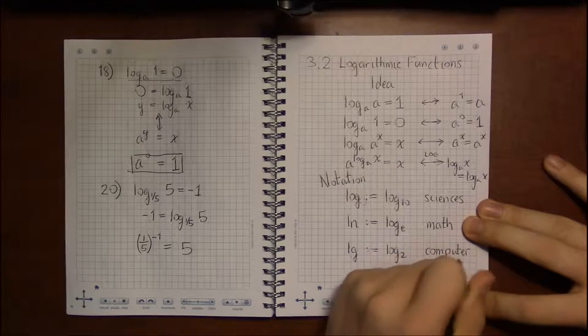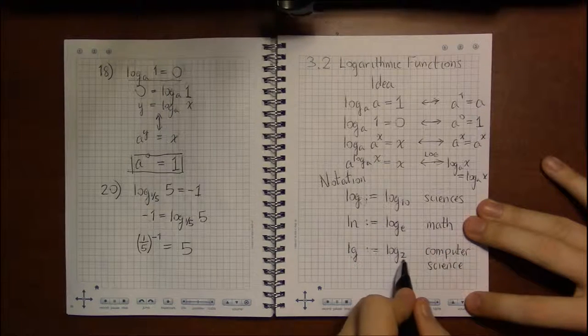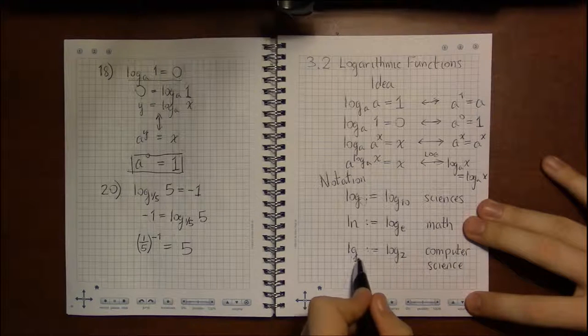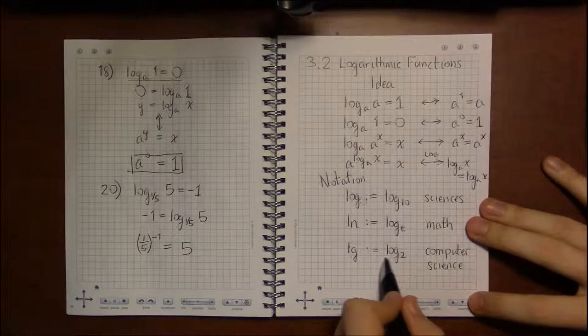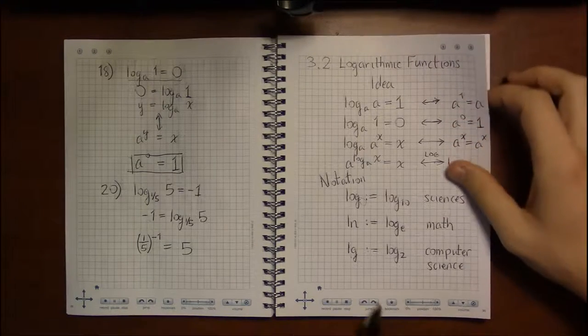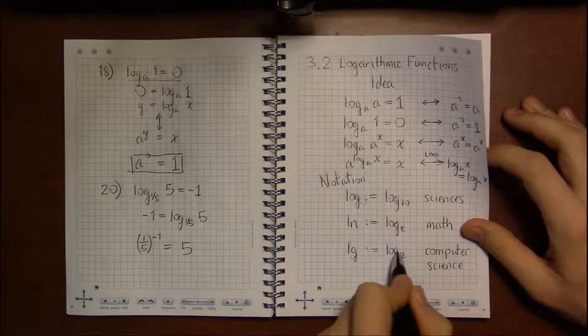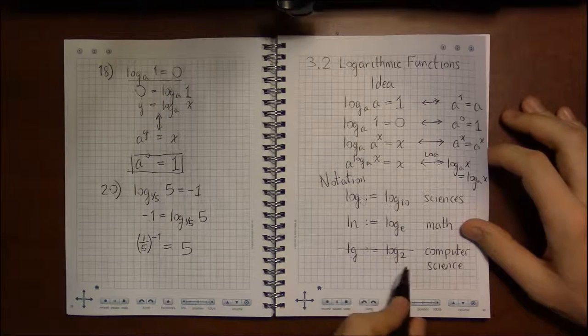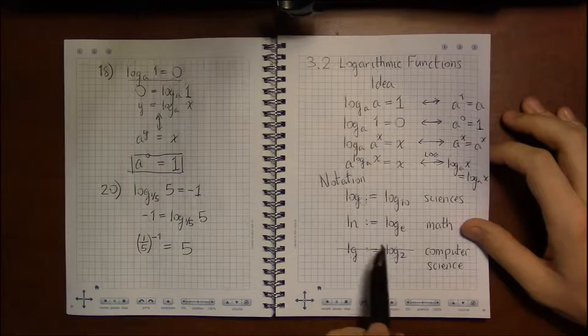Log base 2 ends up being important in computer science. And in later computer science classes, not so much the here's how you program classes, but in the more theory oriented computer science classes, you'll see log base 2 pop up every now and again. And that's just denoted as LG.